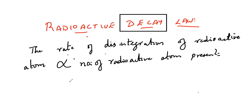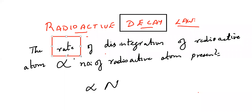Let n be the number of atoms present. Rate of disintegration — whenever we hear the word 'rate' in maths, rate means d by dx. Here, with respect to time, it is d by dt. So d/dt of n is proportional to n itself.